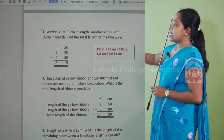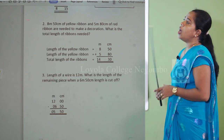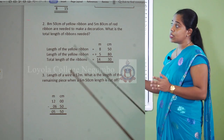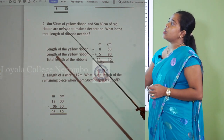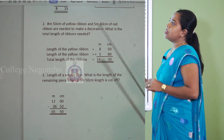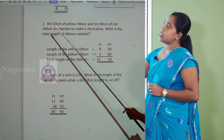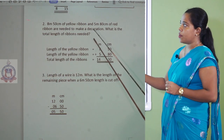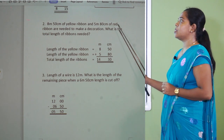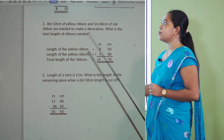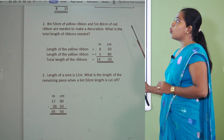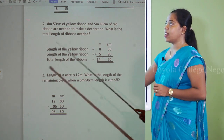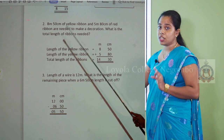Now we'll see how to answer a question using statements. This is also addition. The question: 8 meters 50 centimeters of yellow ribbon and 5 meters 80 centimeters of red ribbon are needed to make a decoration. What is the total length of ribbon needed? The word total means you need to add.